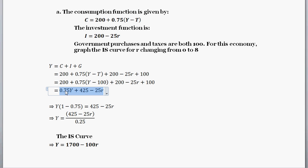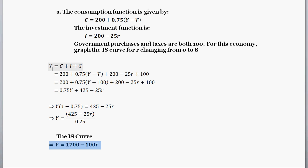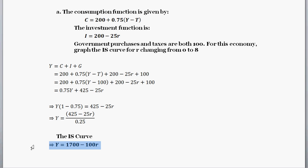Plugging all that in and doing a little arithmetic, we get Y equals three-fourths Y plus 425 minus 25R. Solving for Y, we get the IS curve: Y equals 1700 minus 100R. To summarize how we found this: we started with the equation describing the market for goods and services, plugged in our given equations, then solved so that Y is expressed in terms of the interest rate R.